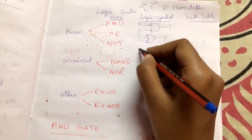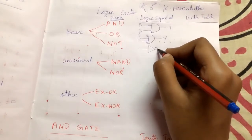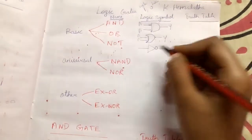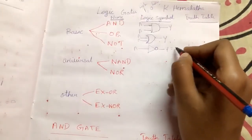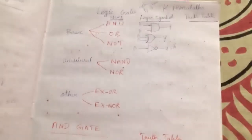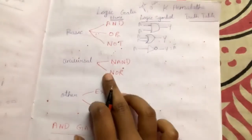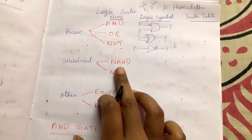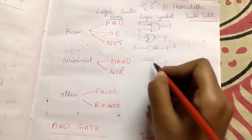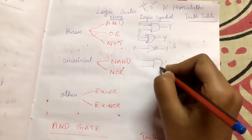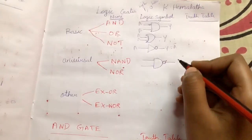Next is the NOT gate. We draw the NOT gate symbol and add a bubble in front of the output. The NOT gate has only one input, and the complement of that input is the output. Next is the universal NAND gate. The NAND gate looks similar to the AND gate — we first draw the AND gate shape, and then add a bubble after it, and that is called the NAND gate.